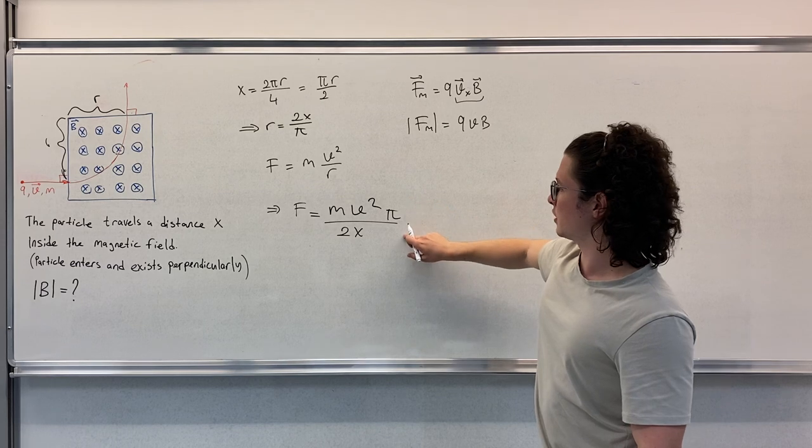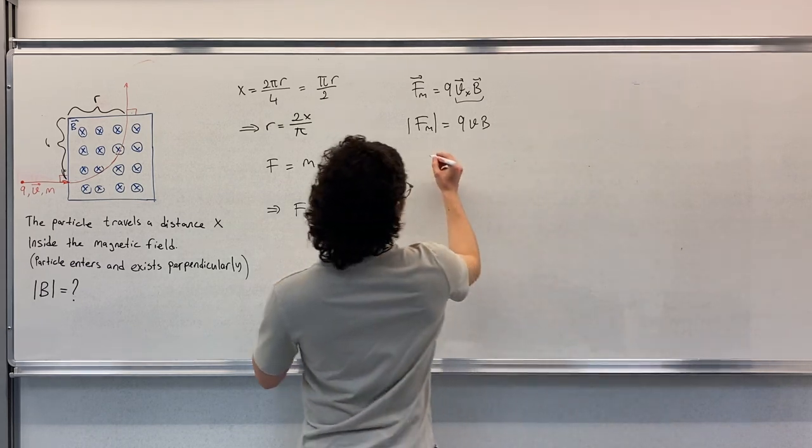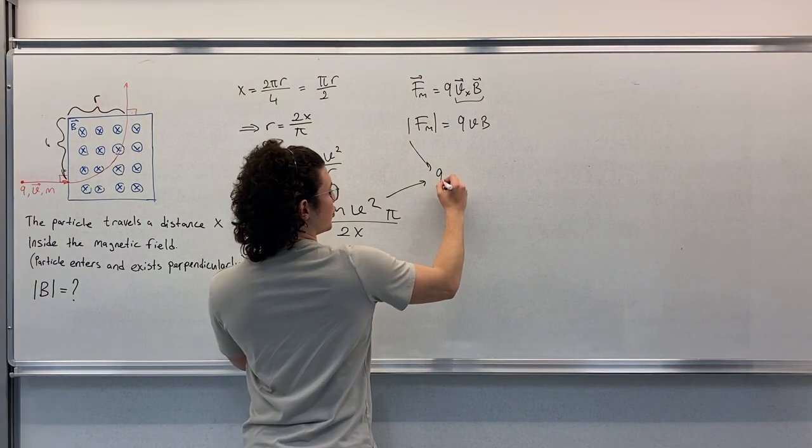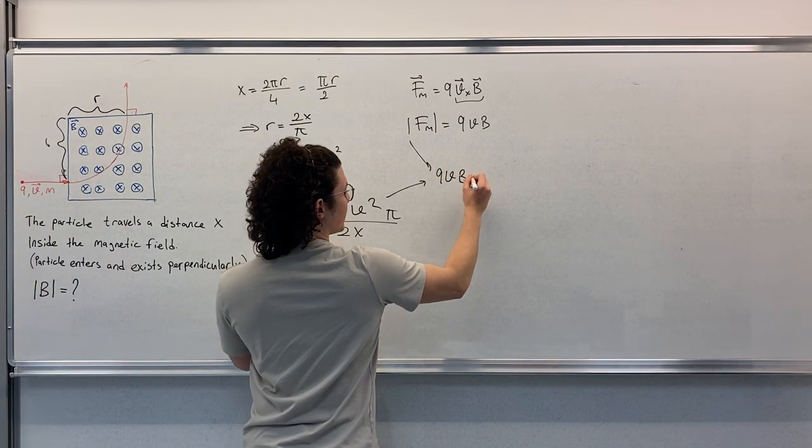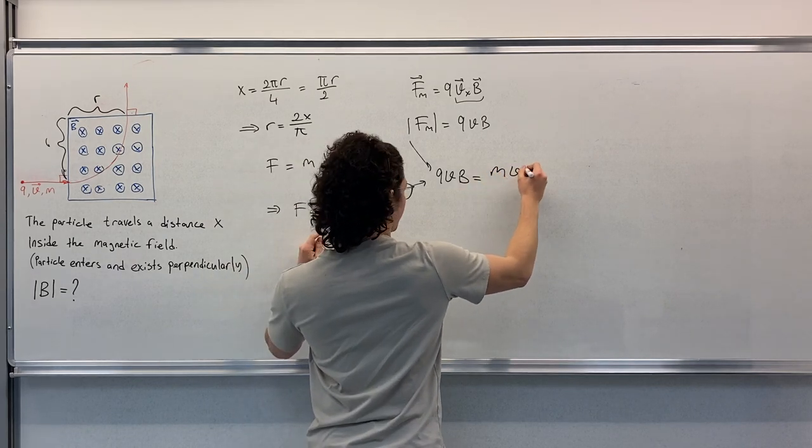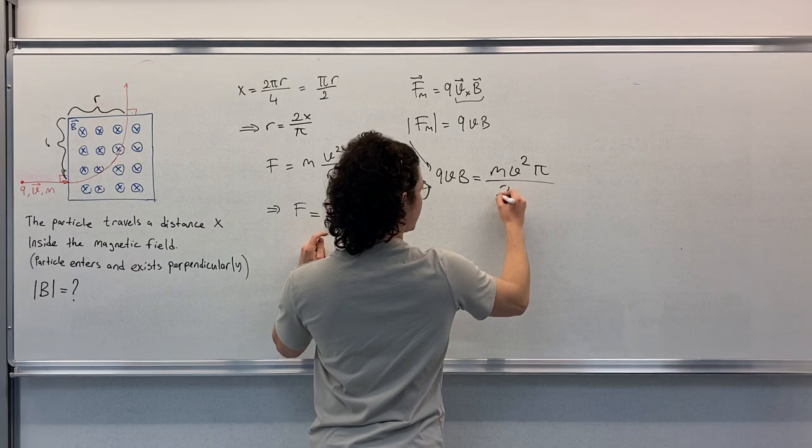Let's put these together. We will have qvB is equal to mv²π over 2x.